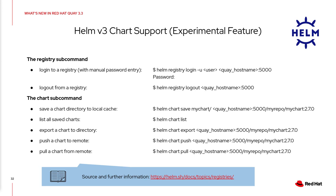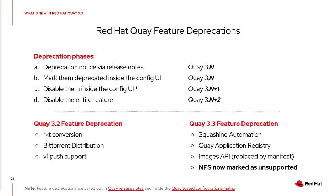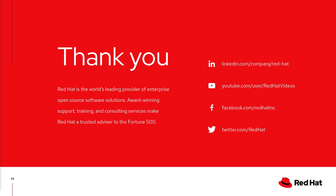In addition to all the new features, we continue to deprecate features that are no longer used, maintainable, or needed. With the previous version we started deprecating Rkt conversion, BitTorrent distribution, and Docker v1 push support. With this release, we are deprecating the squash feature, the application registry — which will hopefully be replaced by artifact spec support — the images API (replaced by the manifest API), and we started deprecating commercial support for NFS with this newest version of Red Hat Quay. Thanks for watching and enjoy our newest version of Red Hat Quay.